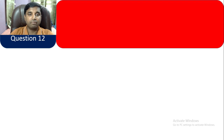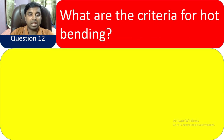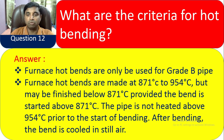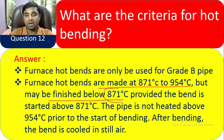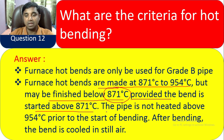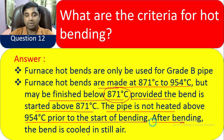Question 12: What are the criteria for hot bending? Furnished hot bends are only used for Grade B pipe. Hot bends are made at 871°C to 954°C, but may be finished below 871°C provided the bend is started above 871°C. The pipe is not heated above 954°C. To start bending, after bending the bend is cooled in still air.